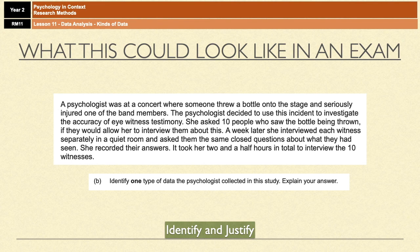So this again, it could be a two marker, explain for one mark and identify for one mark, but there are also examples out there where you get one mark for identifying a correct type of data, and then you have three marks to justify your answer or explain your answer.